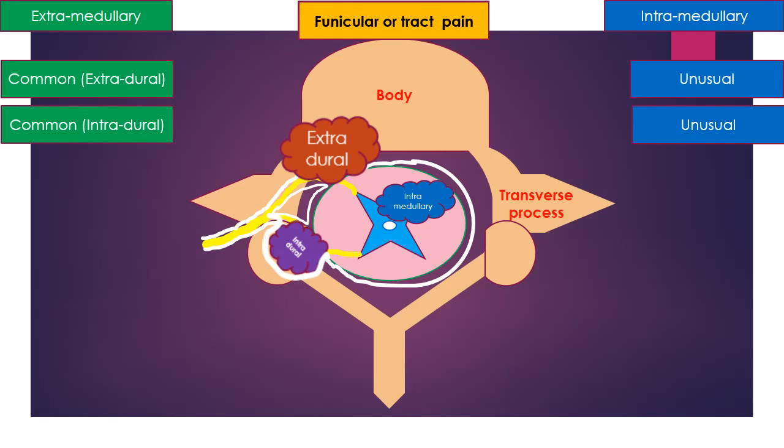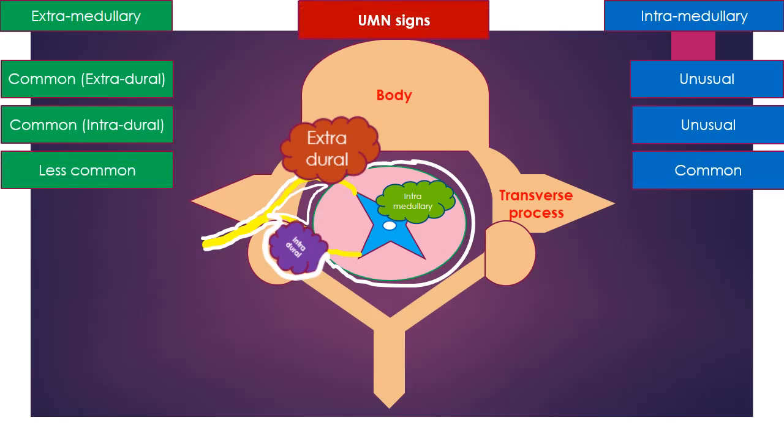Funicular pain, tract pain, or central pain is common with intramedullary lesions. It is described as deep, ill-defined, poorly localizing painful dysesthesia due to involvement of sensory tracts. It is less common in extramedullary lesions. UMN signs occur early with extramedullary lesions and late with intramedullary lesions.